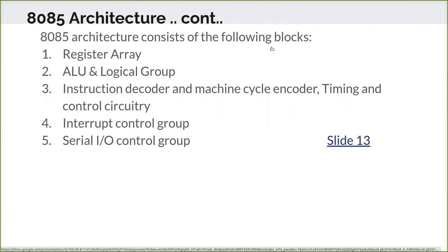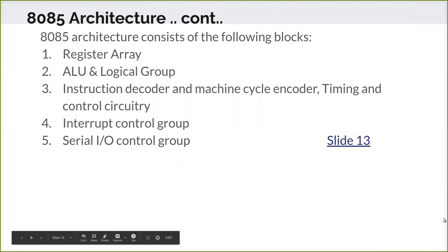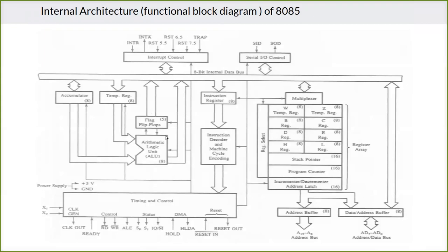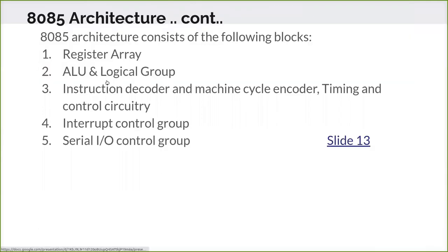The 8085 architecture consists of the following blocks: the register array — which includes B, C, D, E, H, L, stack pointer, and program counter, all used for storage — then the ALU and logical group, which is the arithmetic and logic unit along with flip-flops. Based on the flip-flop settings, decisions can be taken, so flip-flops also come under the arithmetic and logical group.